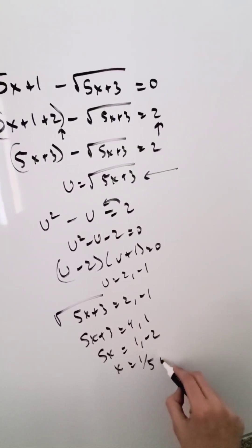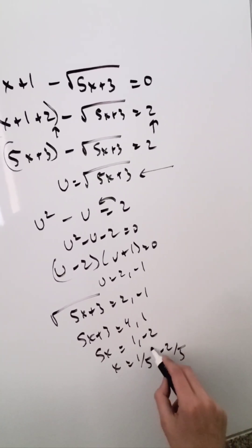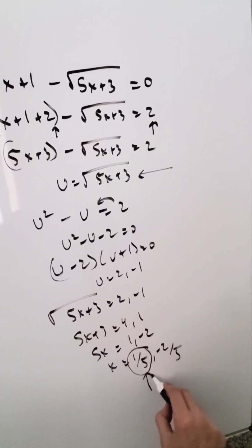x here is equal to 1 over 5 and minus 2 over 5. From both of these, test them out. Only this is your solution: 1 over 5.